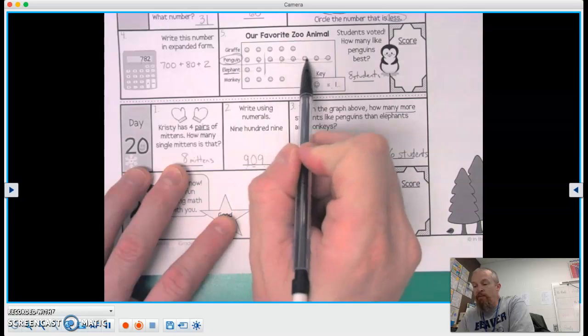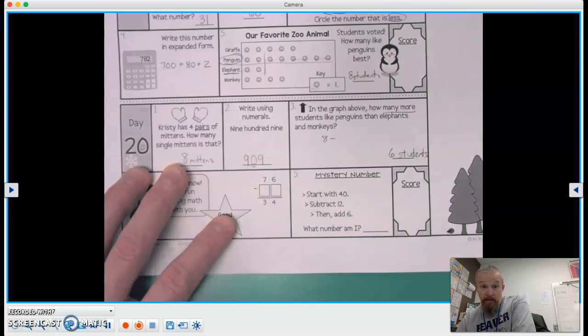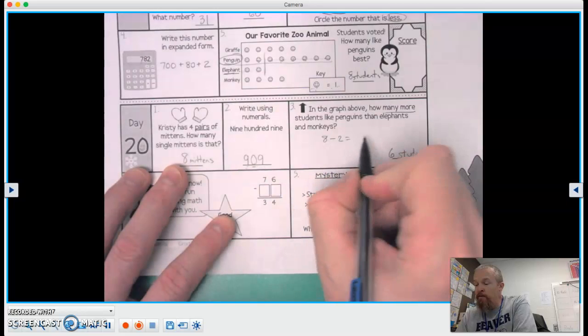Or one, two, three, four, five, six, seven, eight minus the two that like elephants equals six.